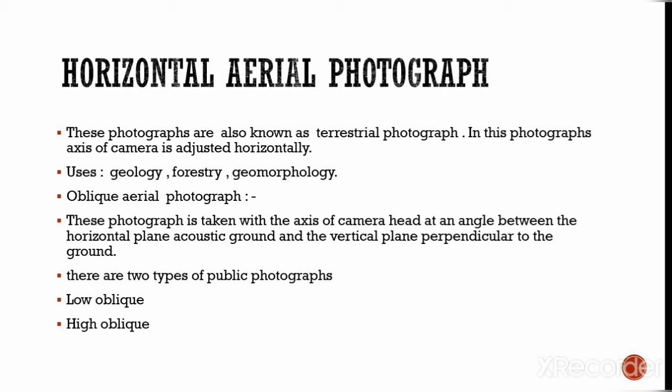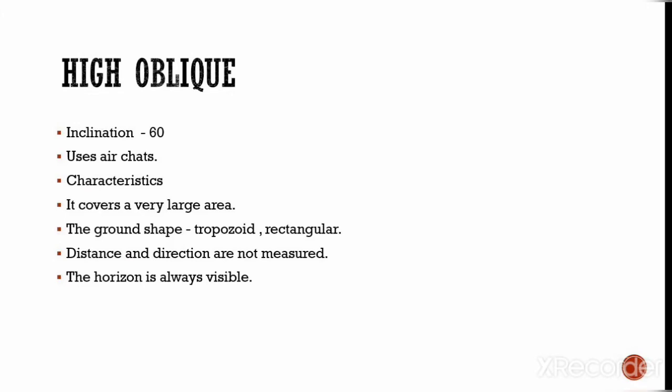The third type of photograph based on camera position is the oblique aerial photograph. This photograph is taken with the axis of the camera at an angle between the horizontal plane and the vertical plane perpendicular to the ground. Oblique photographs are divided into two types: high oblique and low oblique, depending on whether the camera is tilted closer to horizontal or vertical.